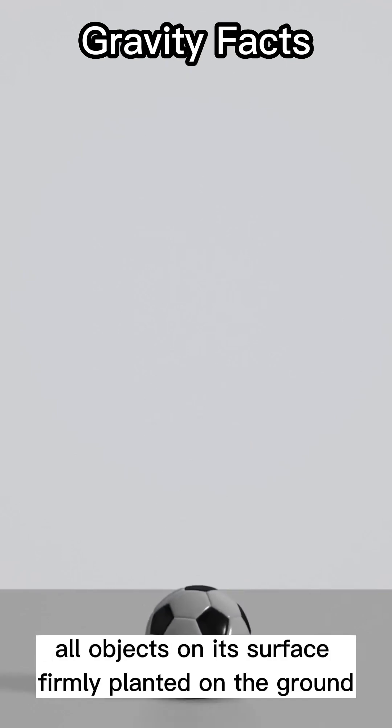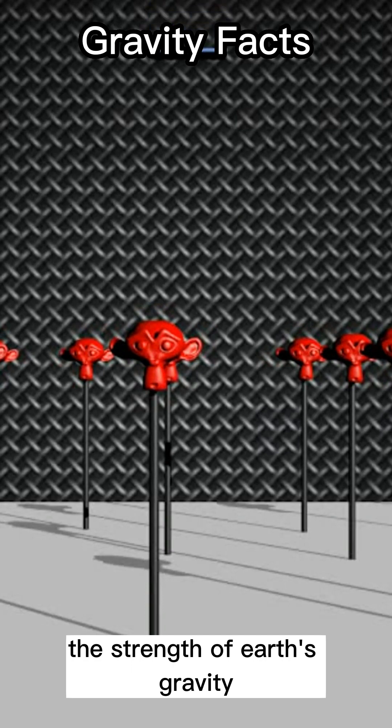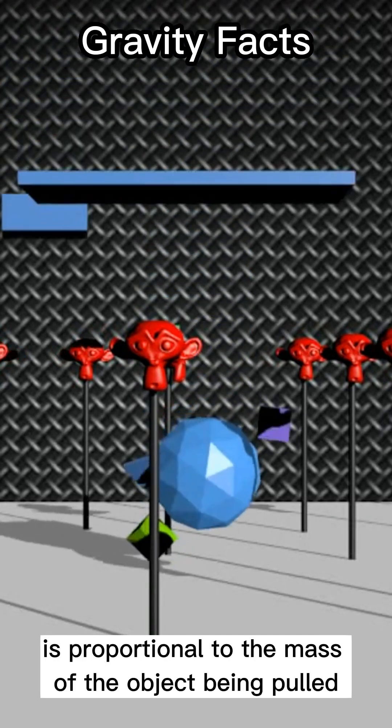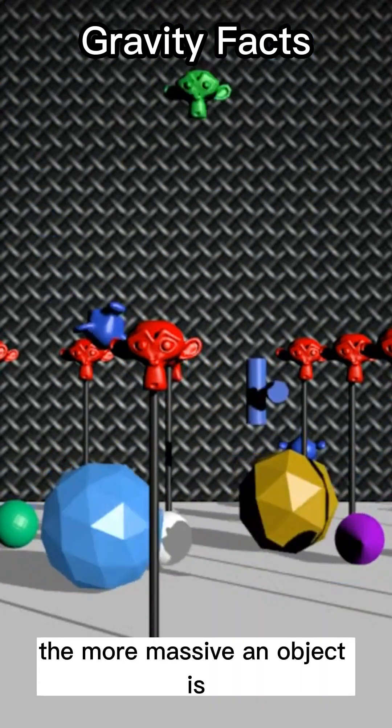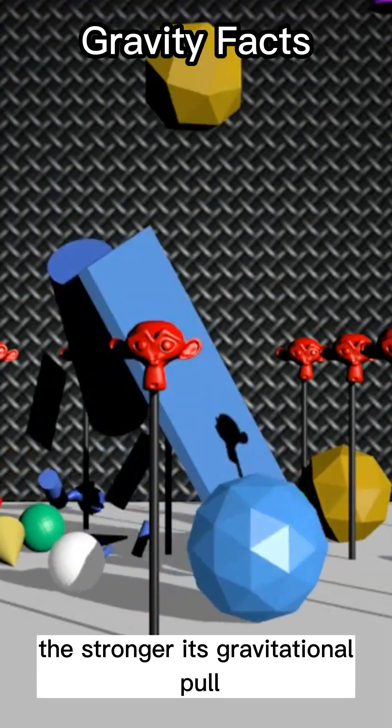Earth's gravity is what keeps all objects on its surface firmly planted on the ground. The strength of Earth's gravity is proportional to the mass of the object being pulled. The more massive an object is, the stronger its gravitational pull.